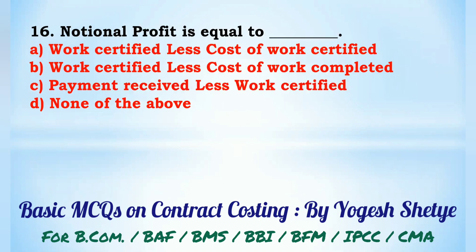Question 16: Notional profit is equal to — (A) work certified less cost of work certified, (B) work certified less cost of work completed, (C) payment received less work certified less cost of work completed. Notional profit is equal to work certified less cost of work certified. Answer: A.